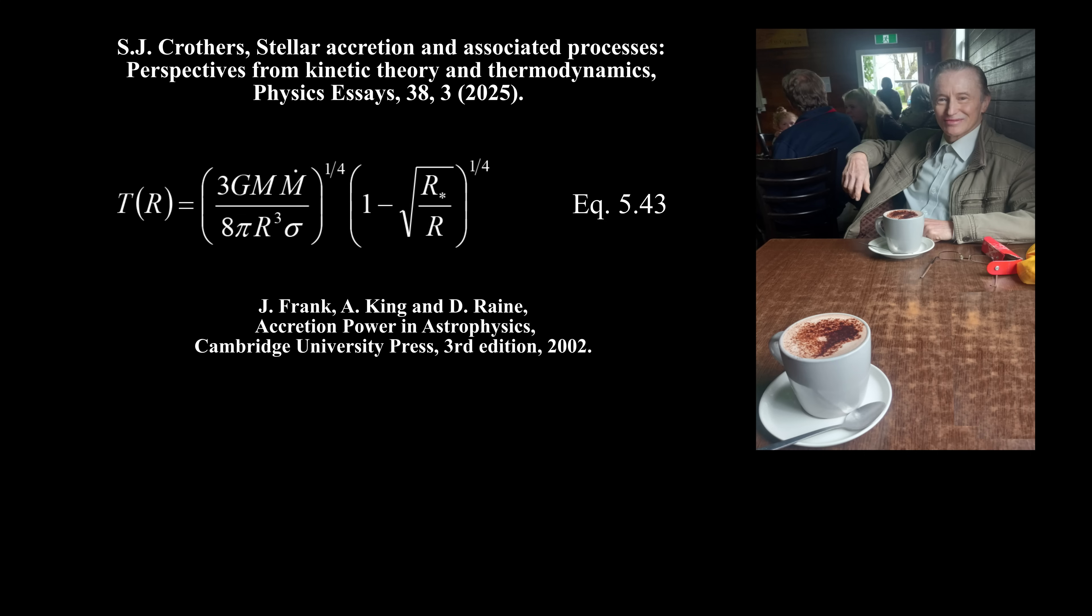At their equation 5.43, Frank, King and Raine claim that for the steady state optically thick blackbody thin disk approximation, the disk temperature is a function of annular radius given by this equation. Here, capital R is the annular radius and capital R sub star is the stellar radius. This equation is thermodynamically unbalanced once again, so it's invalid.